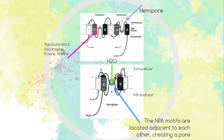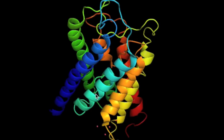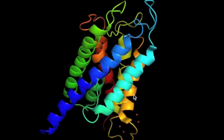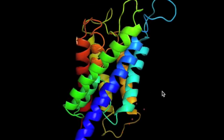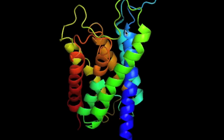Each hemipore contains a short alpha helix of its own, with a signature motif: asparagine, proline, alanine. The two halves of the sequence are positioned at 180 degrees to one another, and are spatially arranged, such that the NPA motifs are adjacent to each other, creating a pore for the entry of water.